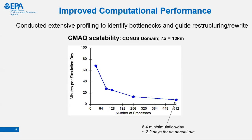Shown here is an example of the scalability of CMAQ version 5.3 for a continental U.S. domain with 12-kilometer resolution. The y-axis shows minutes per simulation day for various processor configurations. The model scales well with the number of processes. With a 512-process configuration, we could get an annual simulation over this domain in about two days, which we think is pretty good. With that, I will hand it over to Ben Murphy.